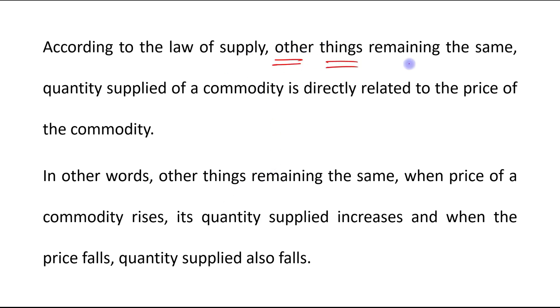Other things remaining the same - what does it mean? It means that factors other than price of the commodity are assumed as constant. For example, input prices, government policy, expectations, number of sellers.